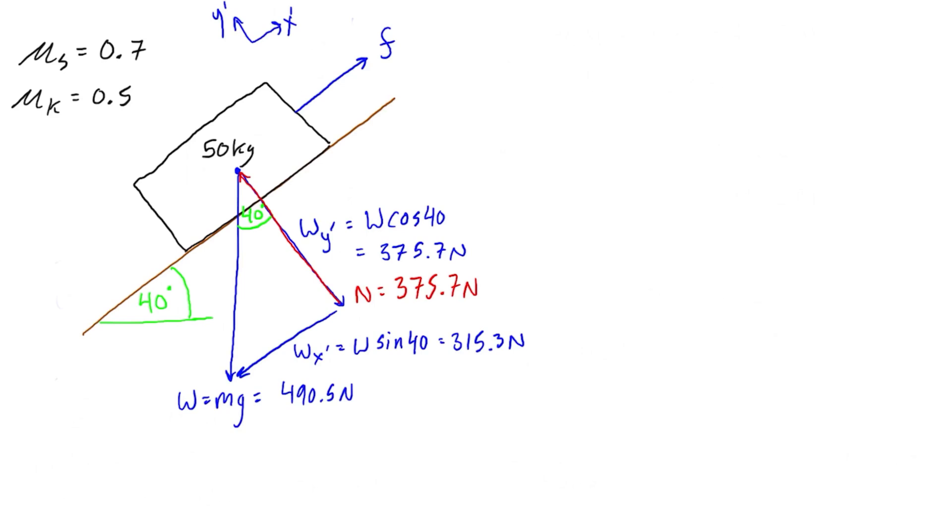So then friction, according to the static coefficient, because we're testing to see if the static friction will be big enough. Let's do it over here actually, let's put the subscript here for static friction. This is going to be equal to μs times N. μs is 0.7 times N, which is 375.7 newtons.